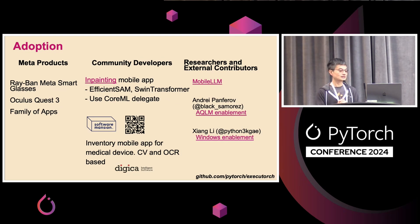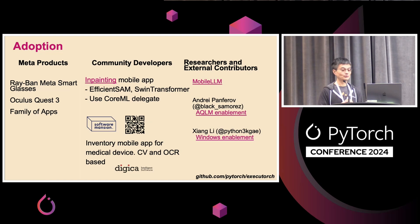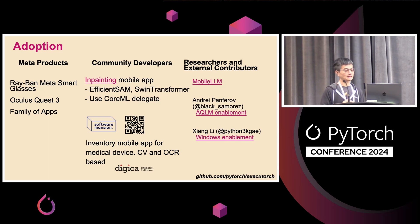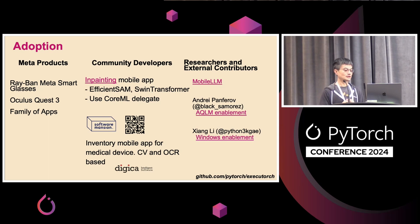Even though ExecuTorch is just coming to beta, we've already seen active adoptions. It's being adopted by Meta products — ExecuTorch is supporting Ray-Ban Meta smart glasses, Oculus Quest 3, and Meta apps like Instagram and WhatsApp. It's being used by developers in the community, including an in-painting mobile app from Segment Anything based on Efficient SAM and Swin Transformer using CoreML delegate for acceleration, and an inventory mobile app from Digica running CV and other models for medical devices.